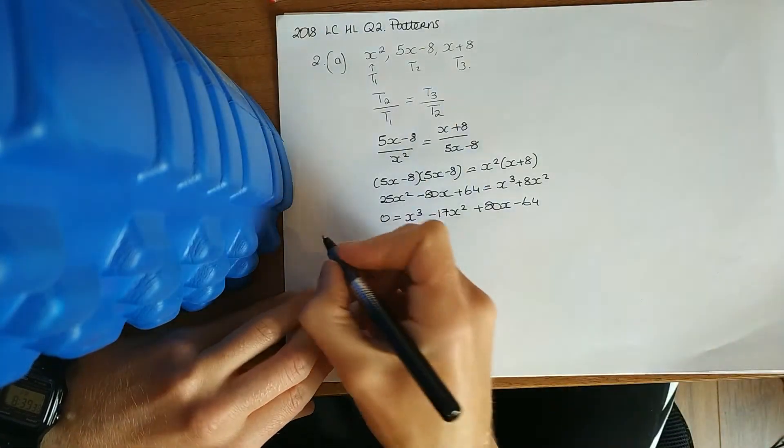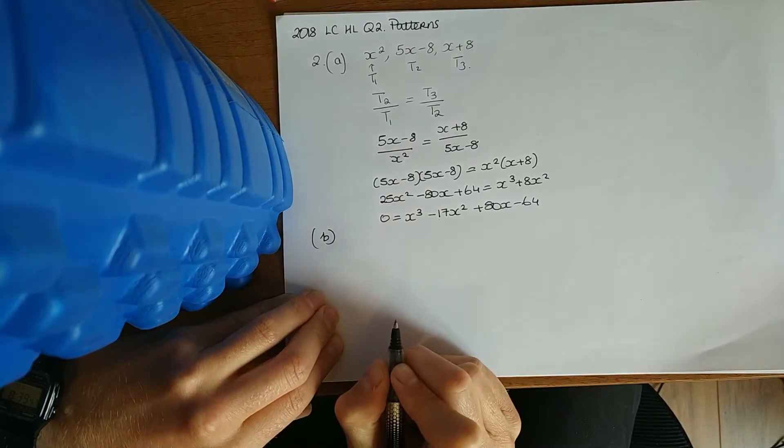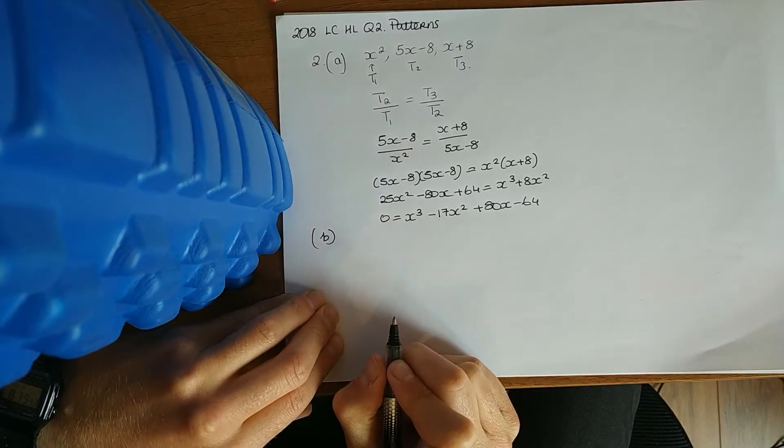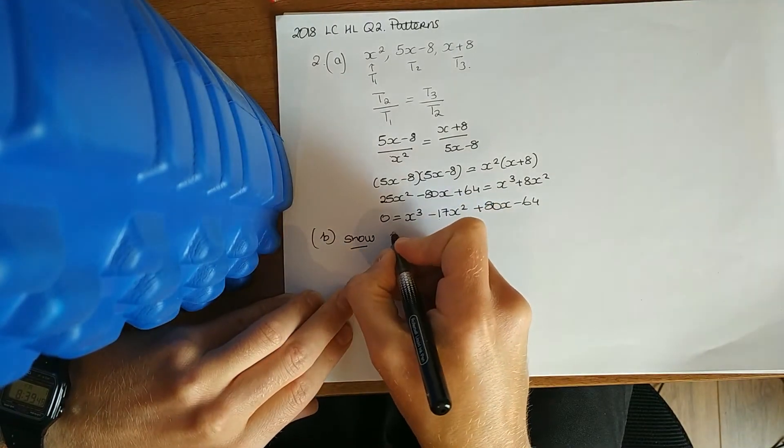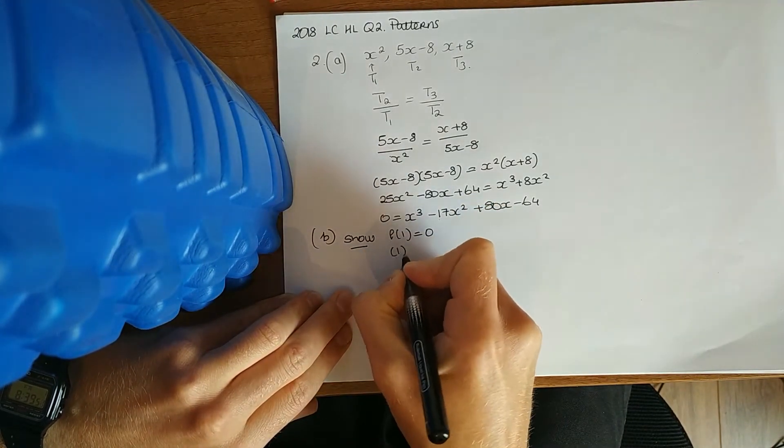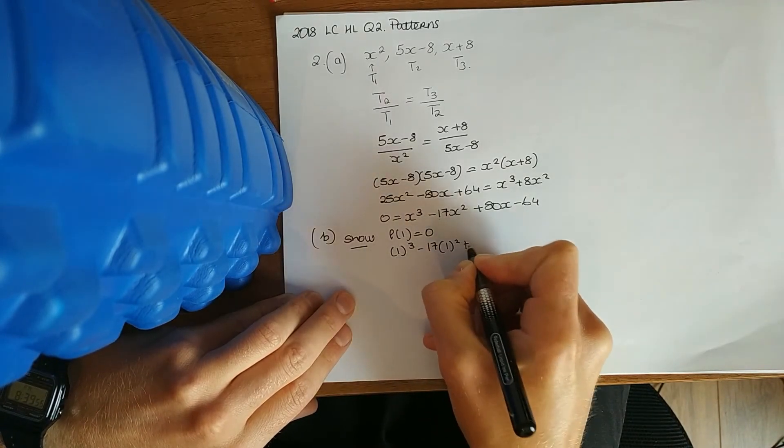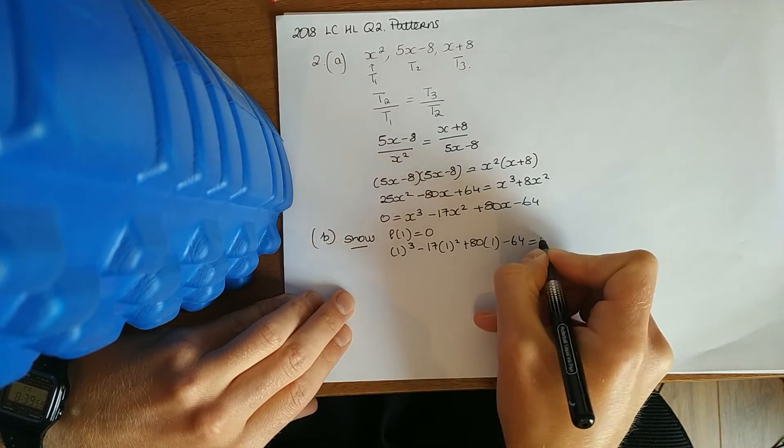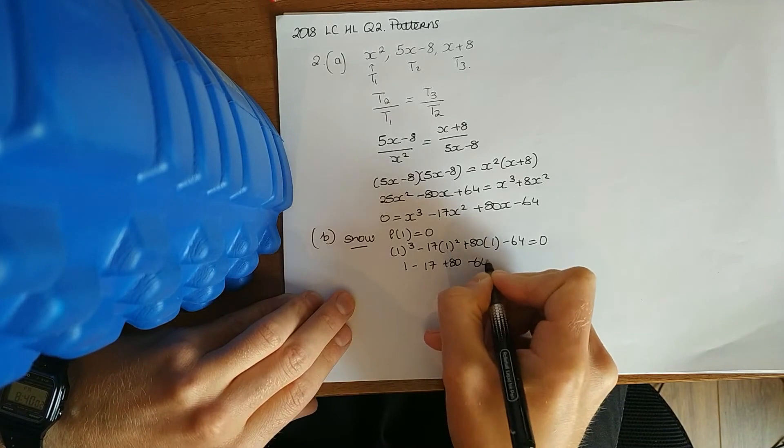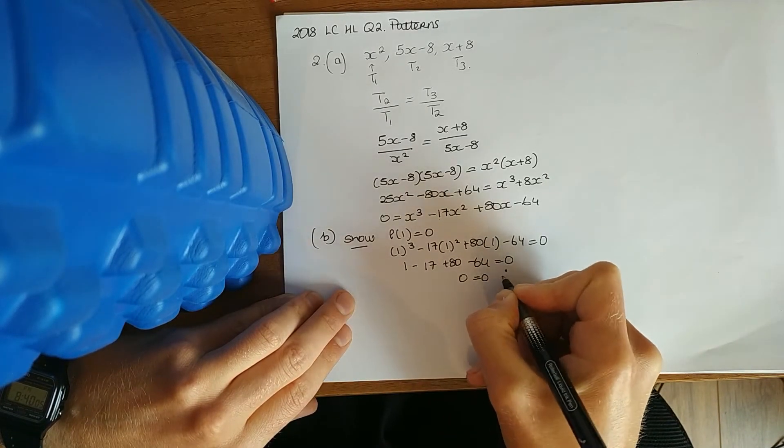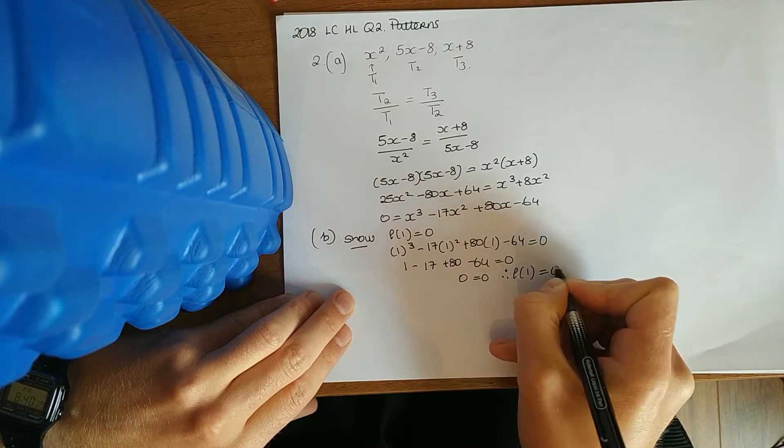The second bit there in B: this here is our function. Show that f of 1 is equal to 0. So that's handy enough. Sub in 1 for our x. It's known as a root.